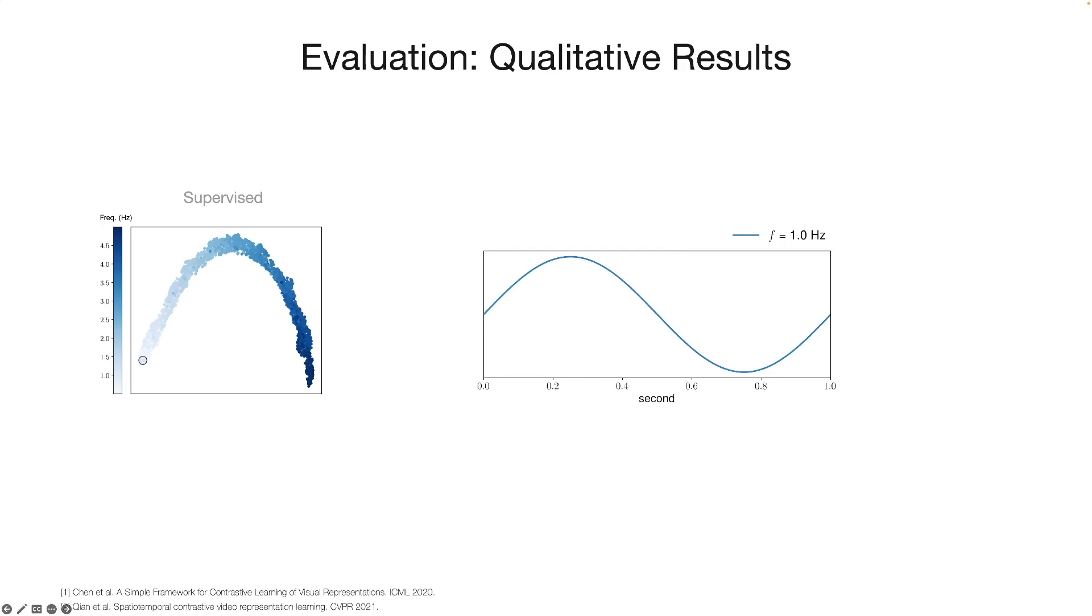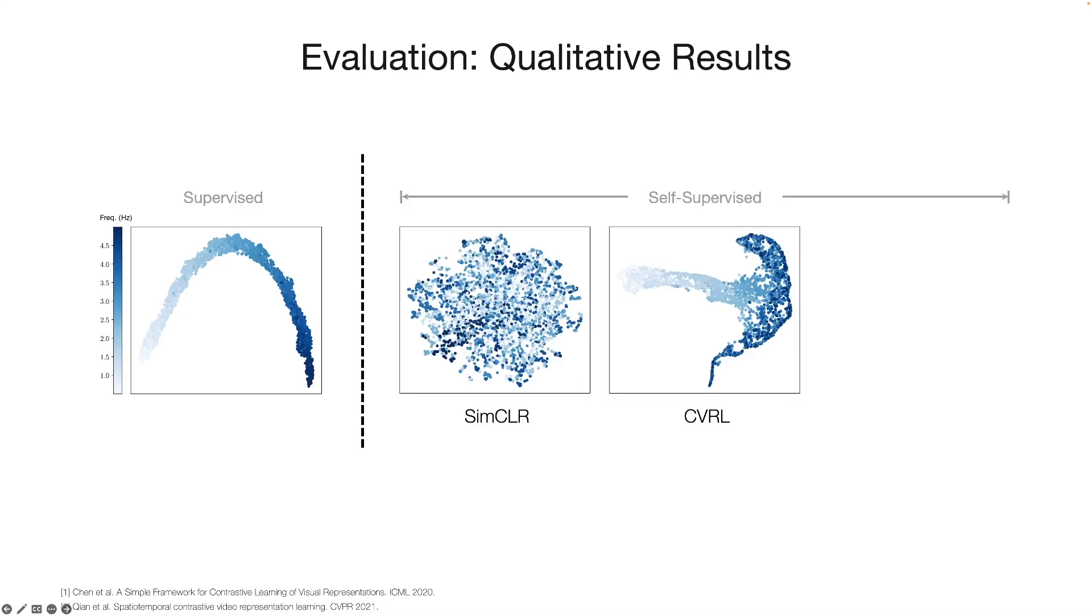Here, each dot shows one feature vector with the color representing its underlying frequency. For the supervised learning baseline, the learned features are well-ordered and clustered with respect to their frequency, with the darker one having higher frequency. Similarly, we plot the representations learned via self-supervised methods, and find that they failed to capture the underlying periodic or frequency information in the data. In contrast, SIMPER learns robust periodic representations with high frequency resolution.